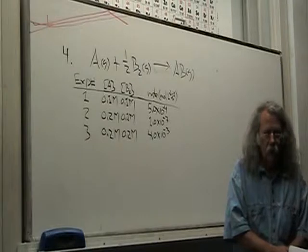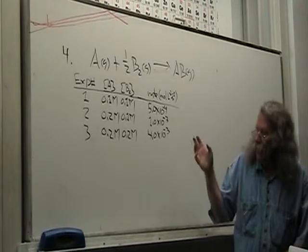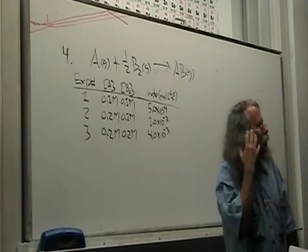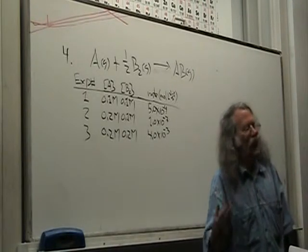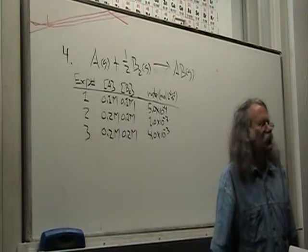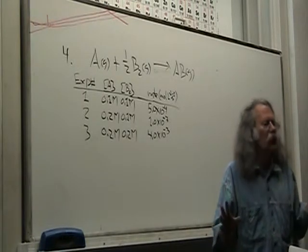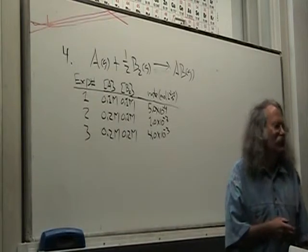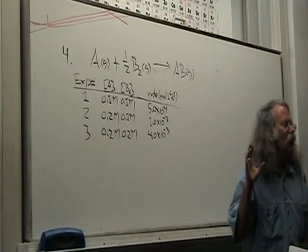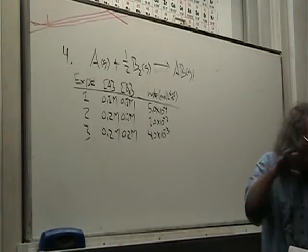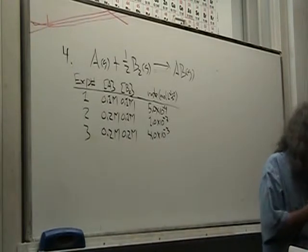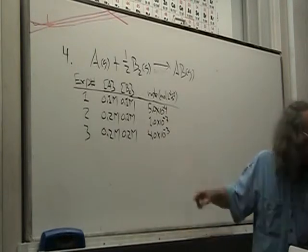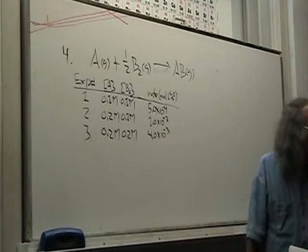So, that means the order with respect to B is second order. Oh, it's the order squared. Well, the order is the exponent. Okay? So, we already know, before we even start, do it in your head. Relax. Look at it. Do it in your head. Take a breather. Relax. And do it in your head first. Then we'll go through and show formally why, but it should make sense. We already know it's first order with respect to A and second order with respect to B. Now, let's go ahead and prove that.